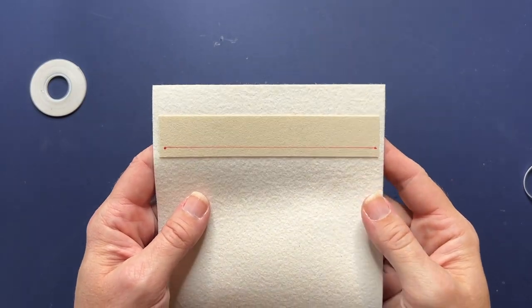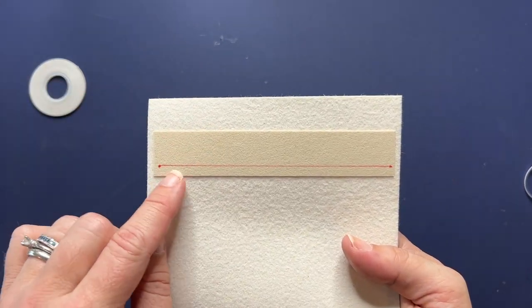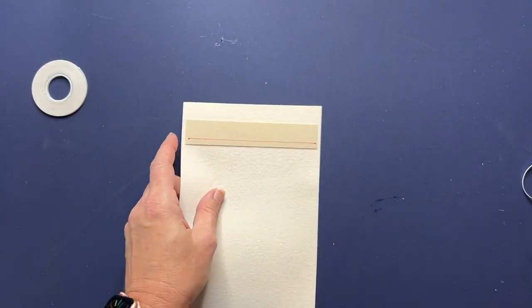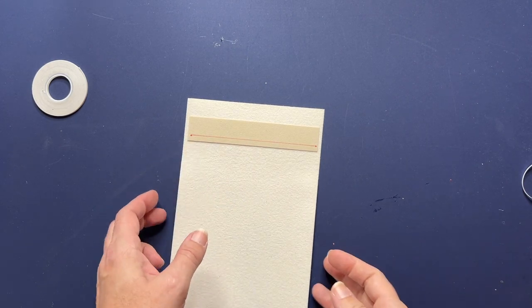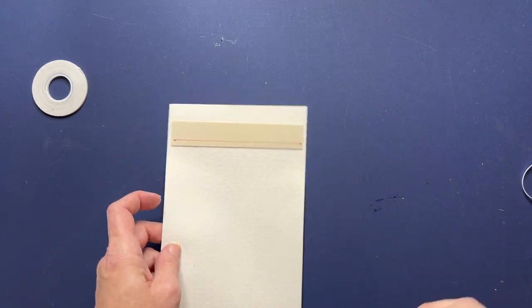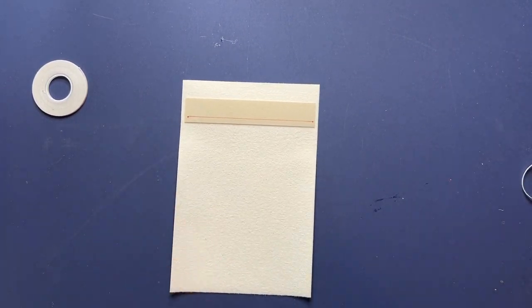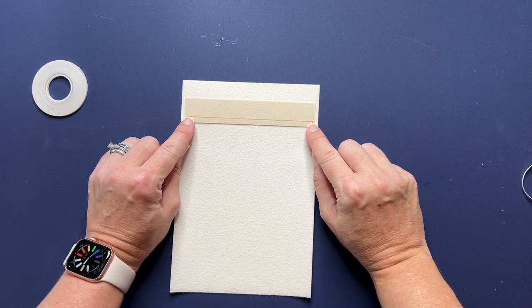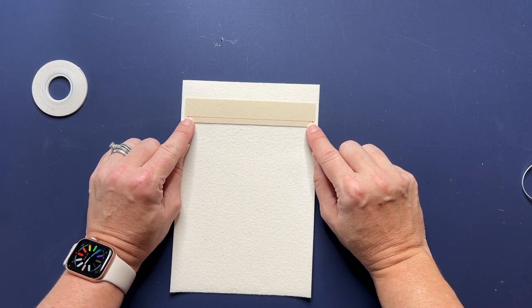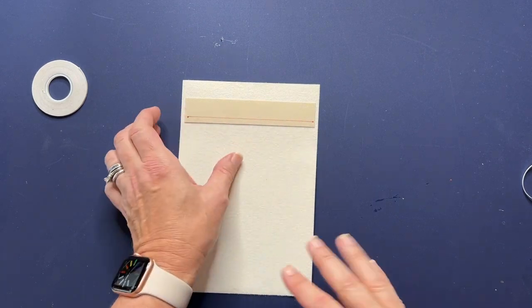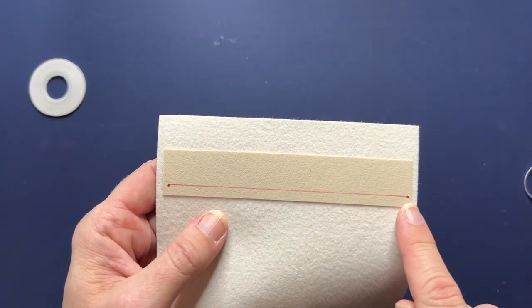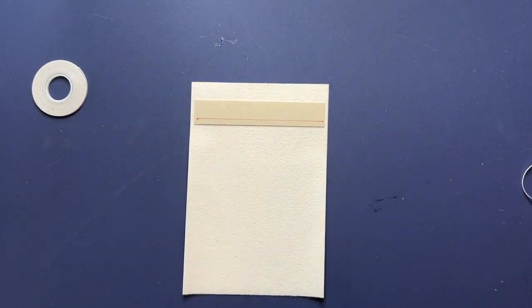Okay, once you get that fused in place, there are instructions on where to mark a line across the center here. And what we're going to do is we're going to take a hole punch, we're going to punch holes right in the ends here, and then we're going to cut this line straight across. So let me grab my hole punch.